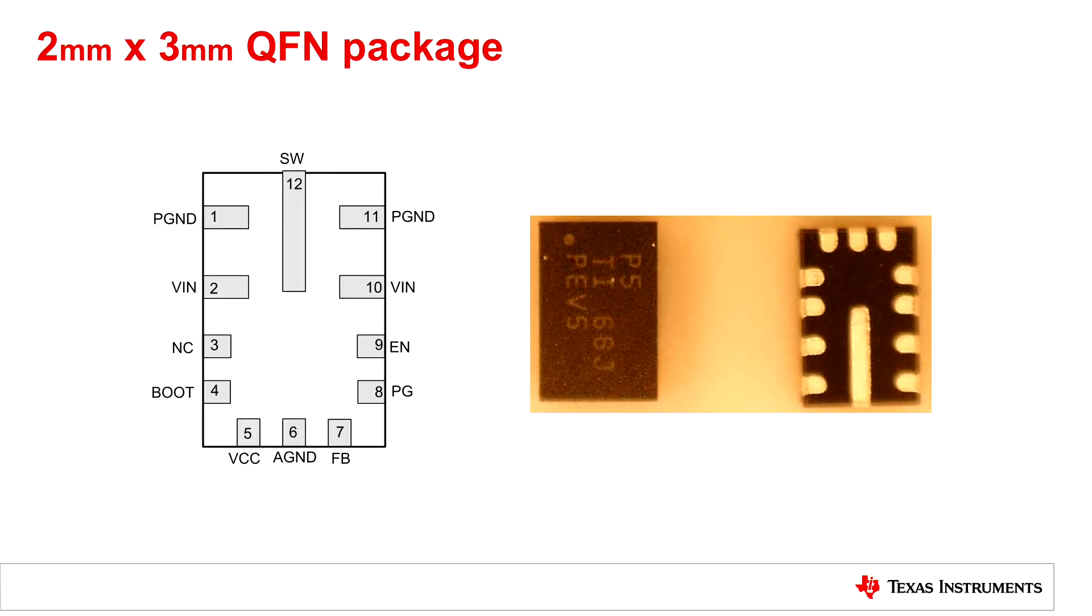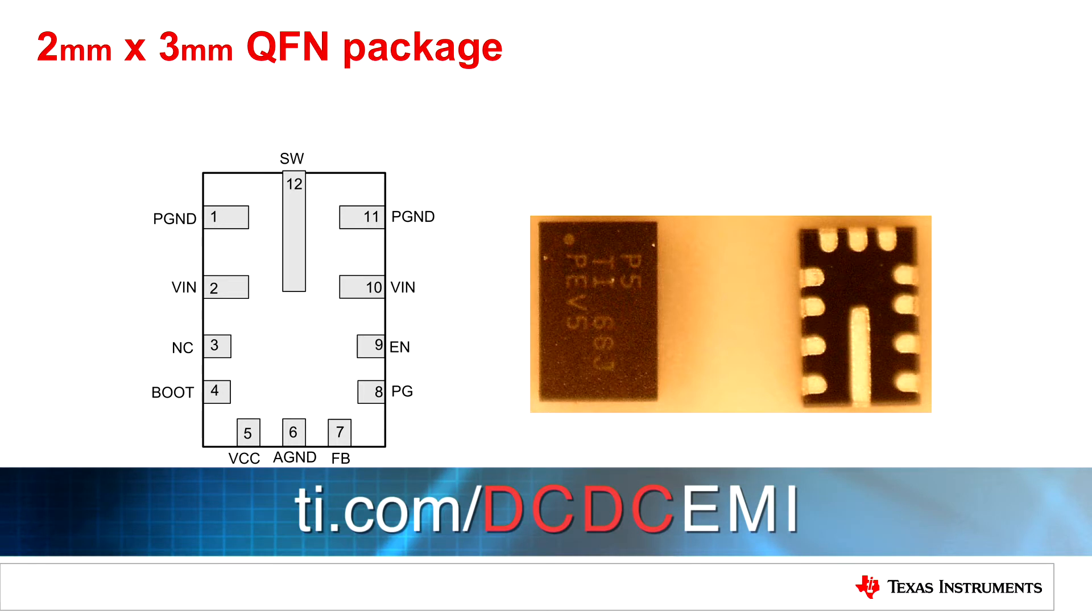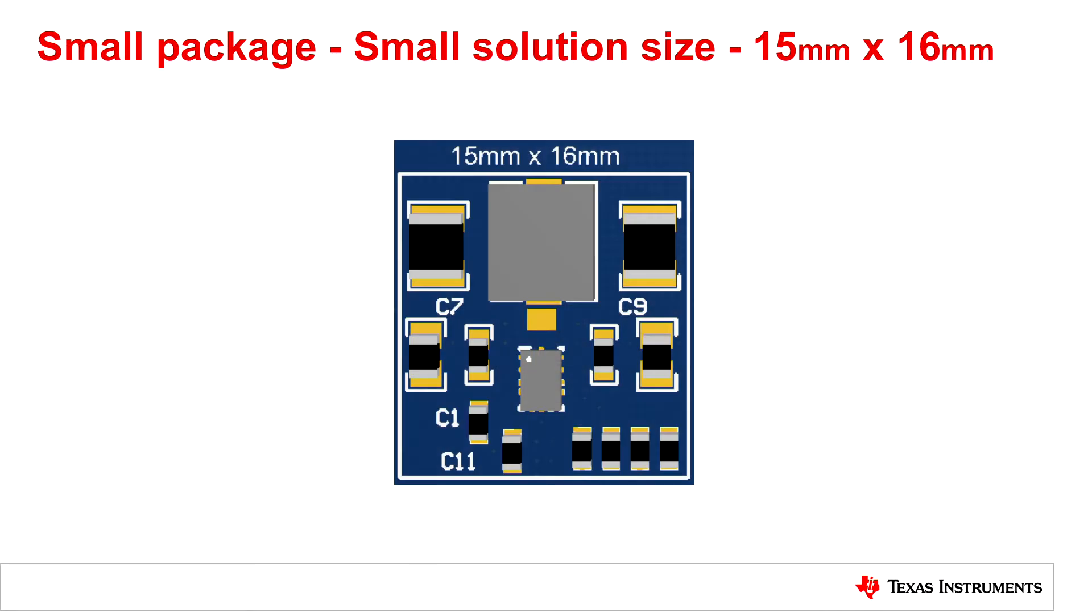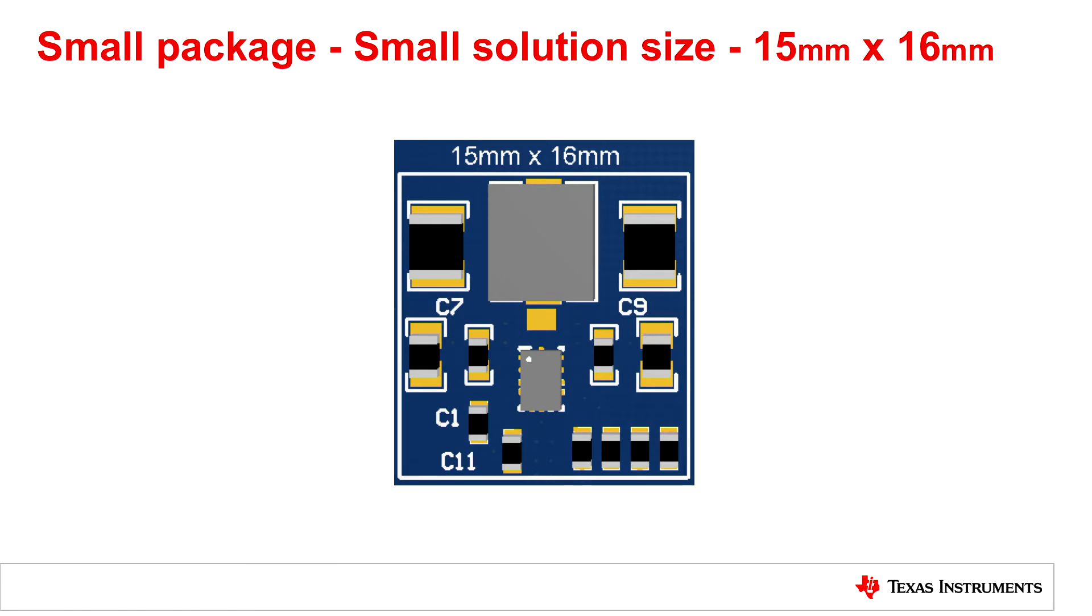So let's take a look at the package first for this particular product. As you can see, it's a very small QFN, 2 millimeters by 3 millimeters. And in fact, it's smaller than the external components required for the entire regulator. So with a very tight layout, you can achieve a solution size of 15 millimeters by 16 millimeters.